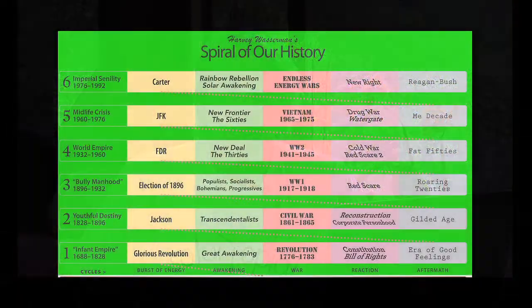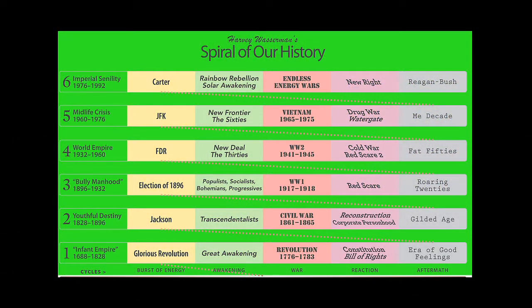This spiral reached its peak in 1945 when the United States achieved full adulthood. We had the world's biggest empire, the atomic bomb, full employment, and were loved all over the world. From there we went into decline, and that decline ends in 1992 with the defeat of George H.W. Bush and the election of Bill Clinton.